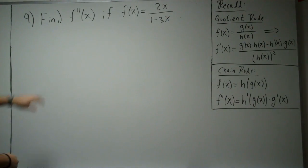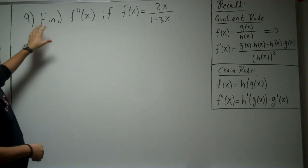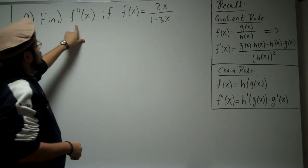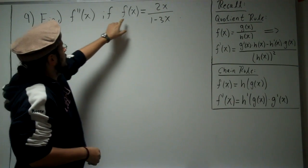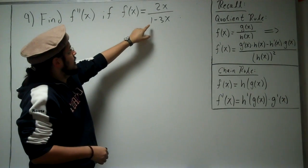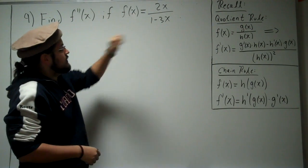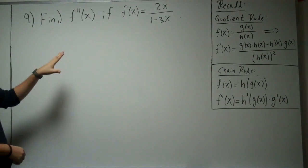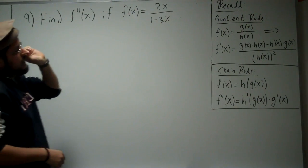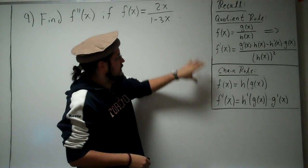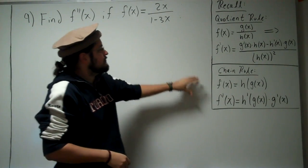Problem 9 asks us to find the second derivative of f(x) equals 2x divided by 1 minus 3x. In order to solve this, we're going to have to use the quotient rule and the chain rule.